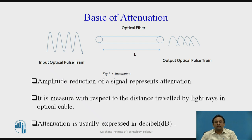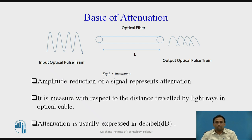If L is the repeater-less length of the link, then this repeater-less length for a given data rate depends on two things: how much the pulse has been attenuated, and what is the spread or broadening of these pulses so that they do not overlap. Overlapping and reduction in amplitude are collectively known as attenuation.